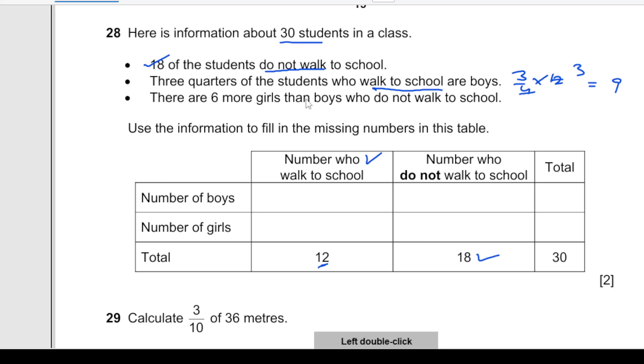This is the number of boys: 9. Now, if this is 12, then 9 plus 3 should be 12.